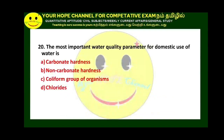The most important water quality parameter for domestic use of water is the coliform count. Among physical, chemical, and bacteriological parameters, bacteriological parameters — specifically coliforms — have immediate health effects due to pathogens and disease-causing bacteria. Option C is the correct answer.